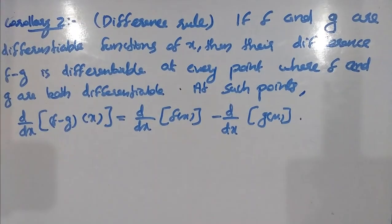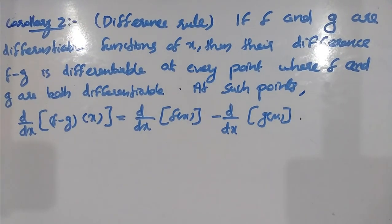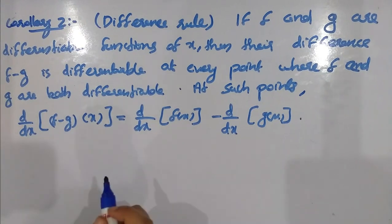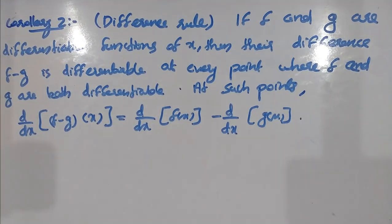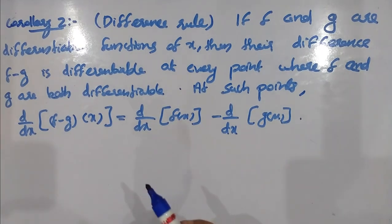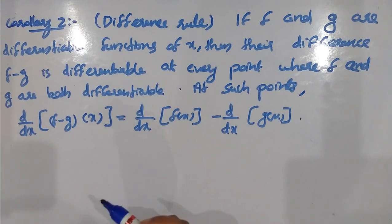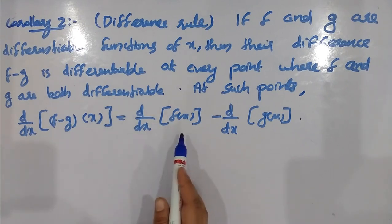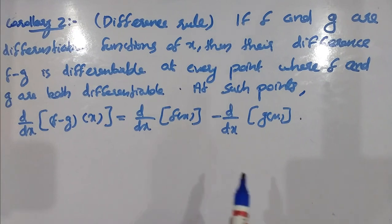The next corollary is the difference rule: if f and g are differentiable functions of x, then their difference f minus g is differentiable at every point where f and g are both differentiable. At such points, d by dx of f minus g of x is equal to d by dx of f of x minus d by dx of g of x.